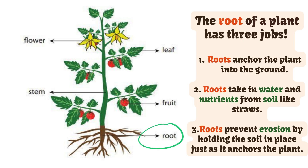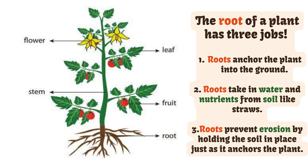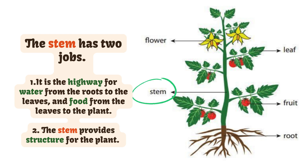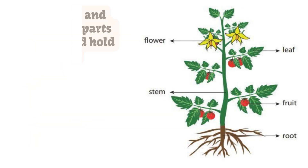Roots take in water and nutrients from soil like straws. Roots prevent erosion by holding the soil in place. Just as it anchors the plant, the stem has two jobs: it is the highway for water from the roots to the leaves, and food from the leaves to the plant.